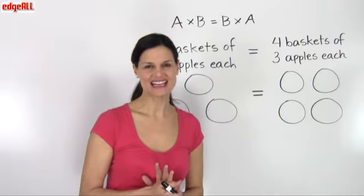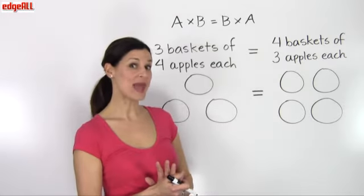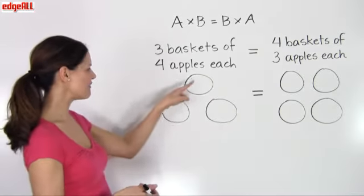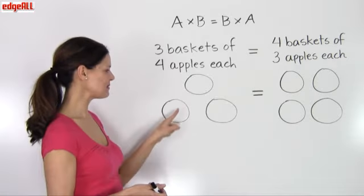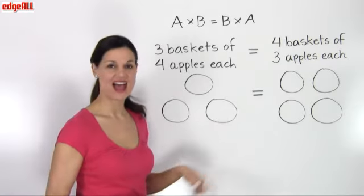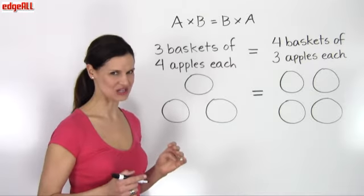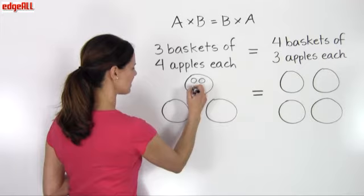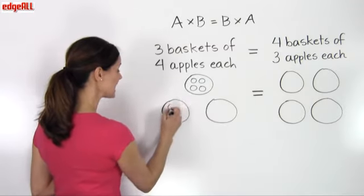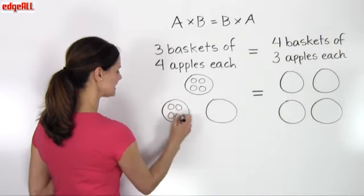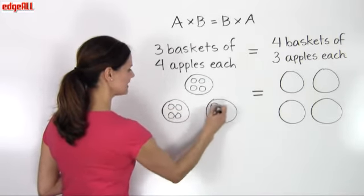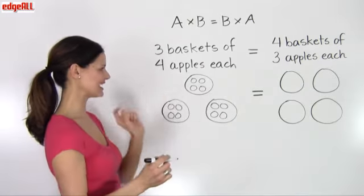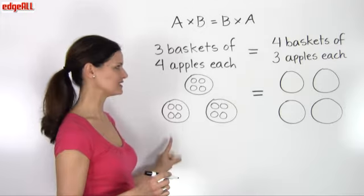Let's look at an example of this using baskets of apples. So if I have three baskets of four apples each, I'm going to draw four little circles to represent my apples in each of my three baskets. So in this case, I've got three baskets of four apples each.